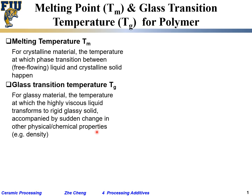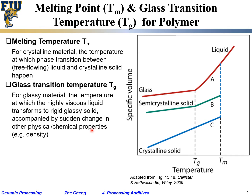That's a glass transition temperature, accompanied by a sudden change in other physical and chemical properties. For example, density. Here we show a plot borrowed from Callister's textbook on materials science and engineering. The horizontal axis is temperature — lower on the left, higher on the right. The vertical axis is specific volume, which means volume per unit mass, essentially the inverse of density.